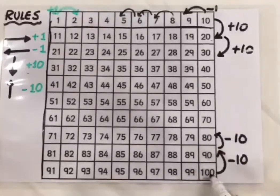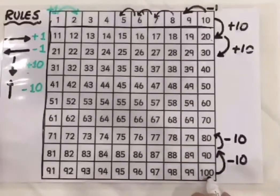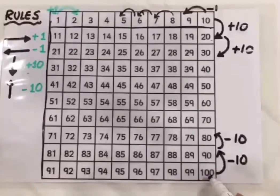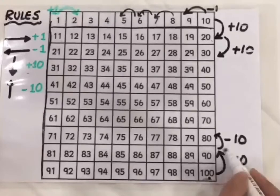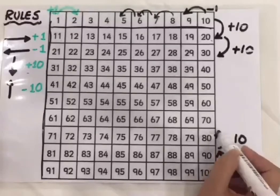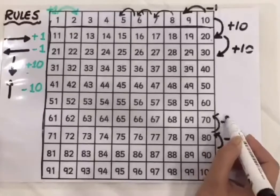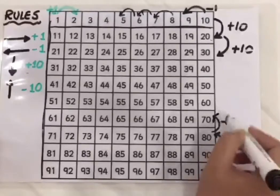Now the opposite of that is if I am going to move from bottom to top, I am going to subtract or minus 10. 100 minus 10 is 90, 90 minus 10 is 80, 80 minus 10 is 70 and so on.